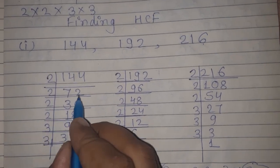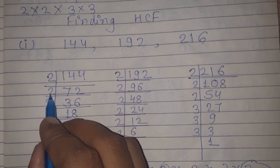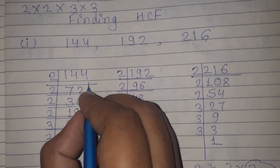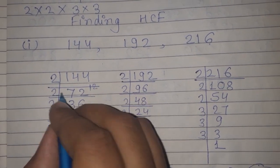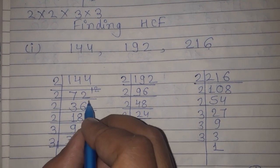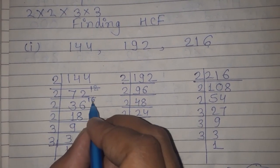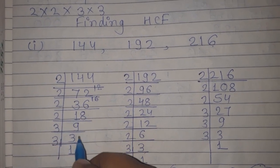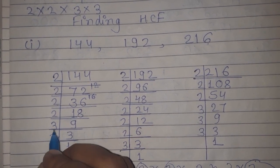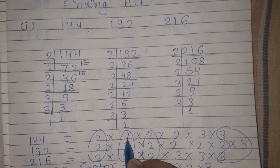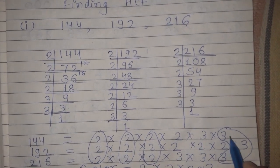Continuing the factorization of 144: dividing by 2 repeatedly — 72 ÷ 2 = 36, 36 ÷ 2 = 18, 18 ÷ 2 = 9. Now 9 is an odd number, so it is divisible by 3: 3 × 3 = 9, and 3 × 1 = 3. So the prime factorization of 144 is 2 × 2 × 2 × 2 × 3 × 3.